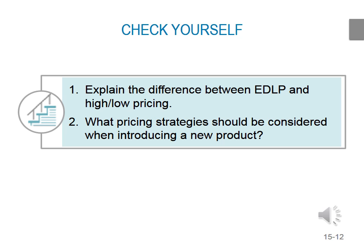Time for another assessment. Explain the difference between everyday low prices and high-low pricing. Everyday low prices save search costs of finding the lowest overall prices because they are already low, while high-low provides the thrill of the chase for the lowest price. What pricing strategies should be considered when introducing a new product? There are two: price skimming and penetration pricing.